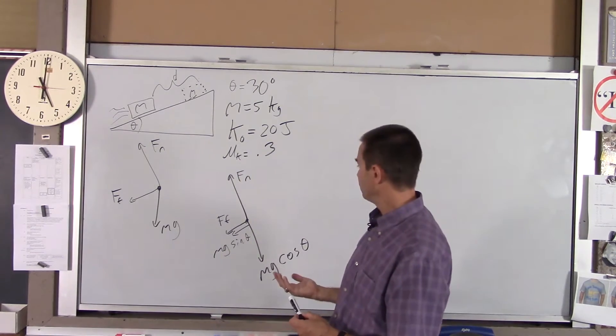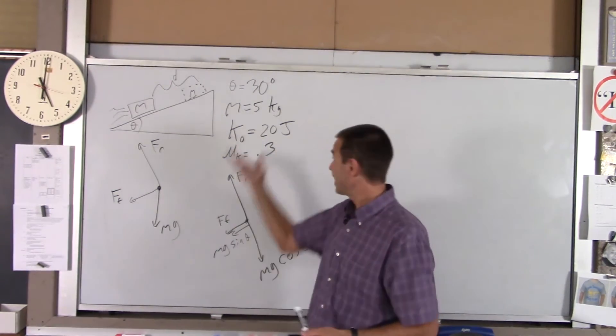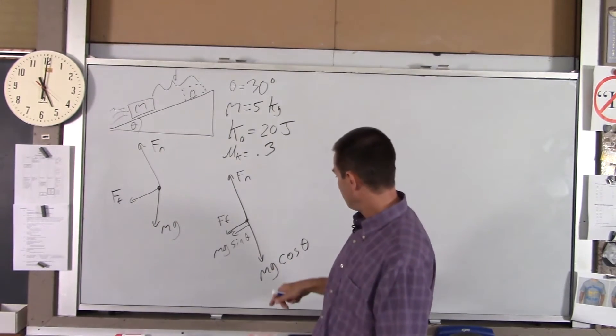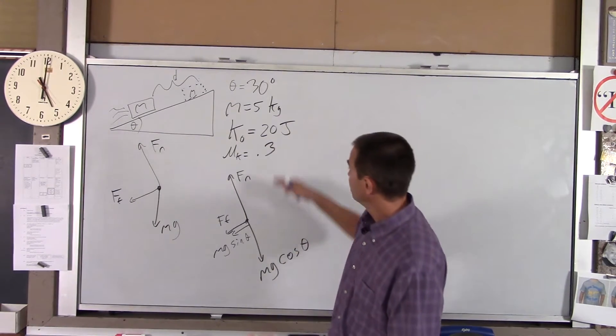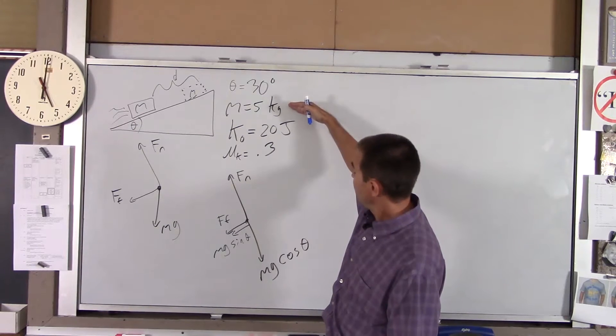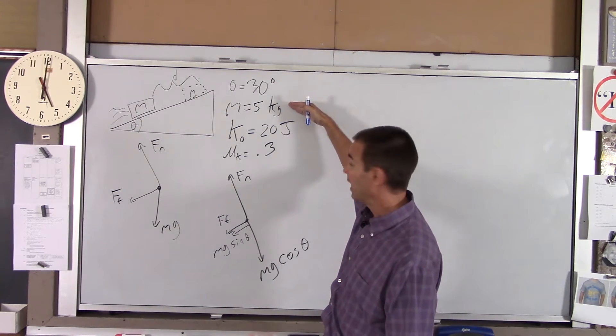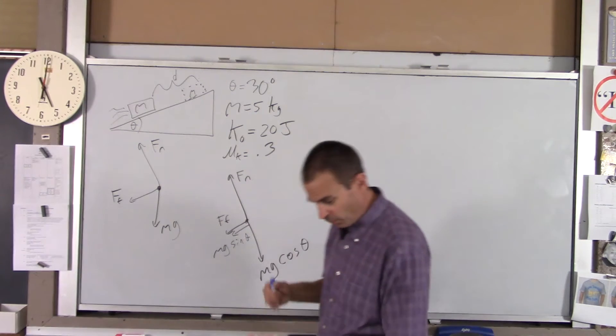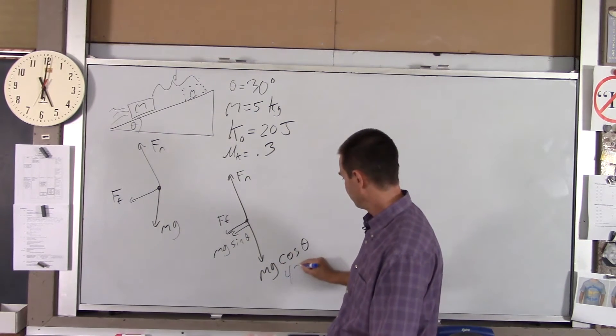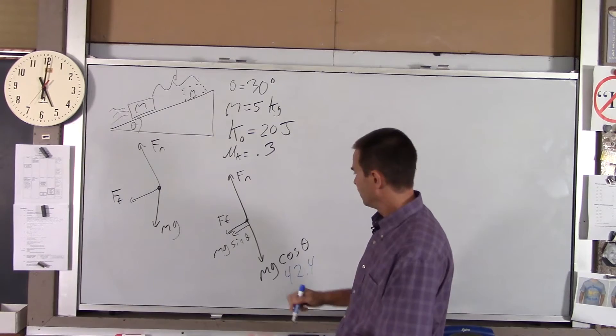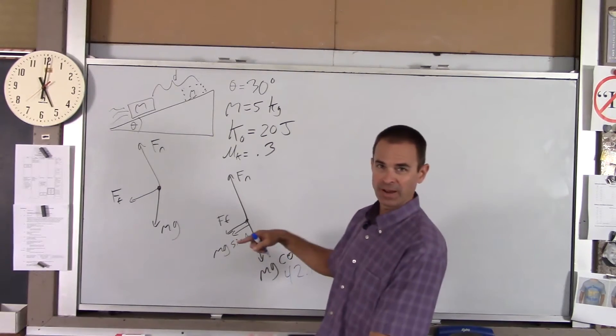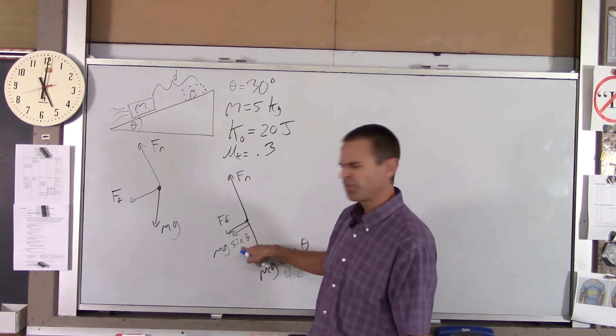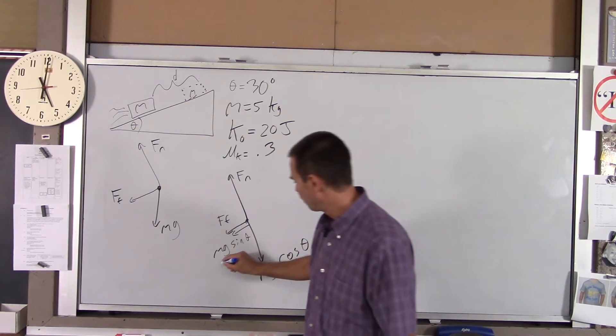So the next thing I'm going to do is I'm going to find all those numbers, because I've got numbers here, I might as well find them. So if you do this, Mg cosine theta, so you take 5 times 9.8, which is 49, times cosine 30, and you get 42.4. If you do Mg sine theta, no calculator necessary, 5 times 9.8 is 49, sine of 30 is a half, half of 49 is 24 and a half.